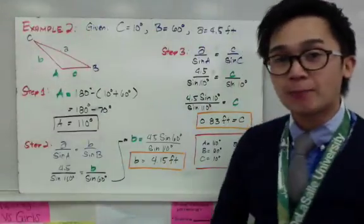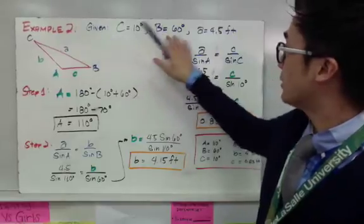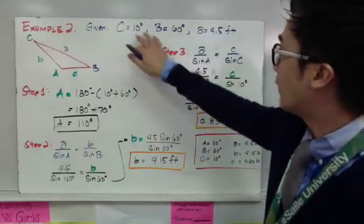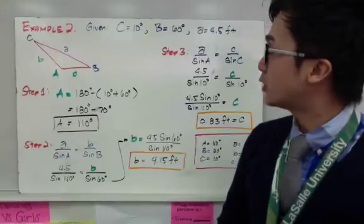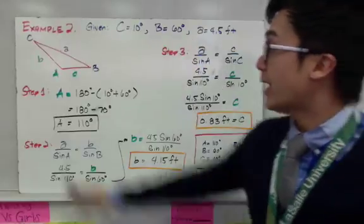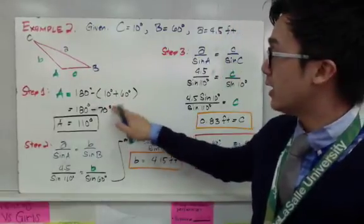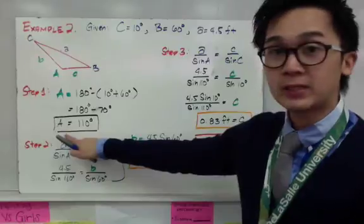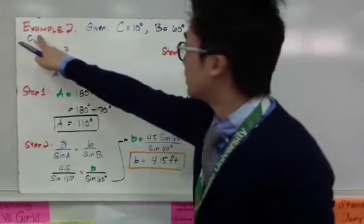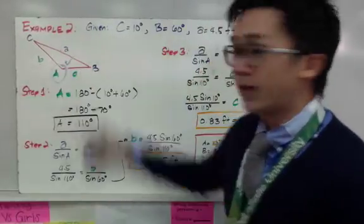For the second example, this will have a different approach because we are given two angles and one side. In the previous example, we had one angle and two sides. Now we have two angles and one side, and in this case it is a lot easier to find the third angle — all we have to do is add the two given angles together and subtract from 180. That is my first step: find angle A by adding 10 and 60 degrees and subtracting from 180.